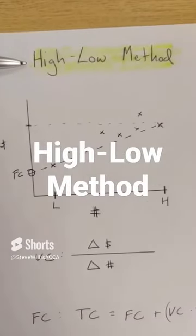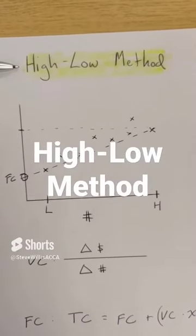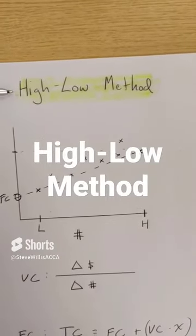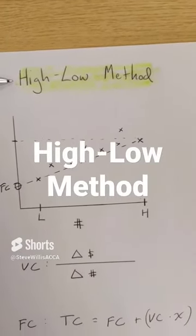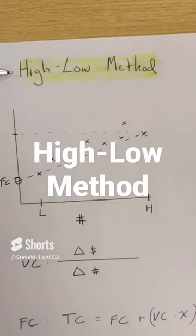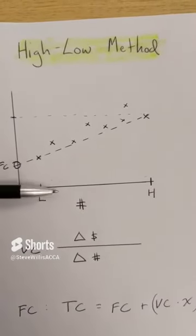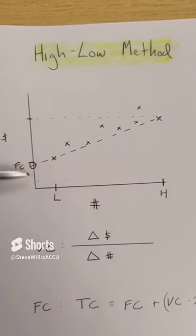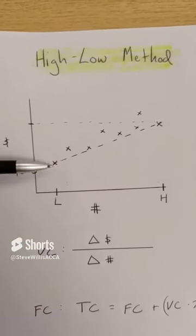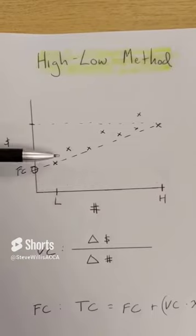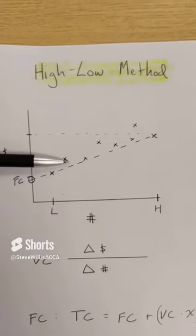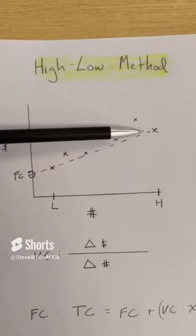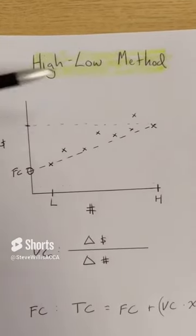Let's look at the high-low method, a quick way to understand our fixed and variable costs by analyzing our total costs and corresponding activity. I plot my activity level on the x-axis of a graph, and then I plot the corresponding total cost, and we see roughly positive correlation — the greater number of units I produce, the higher my costs.